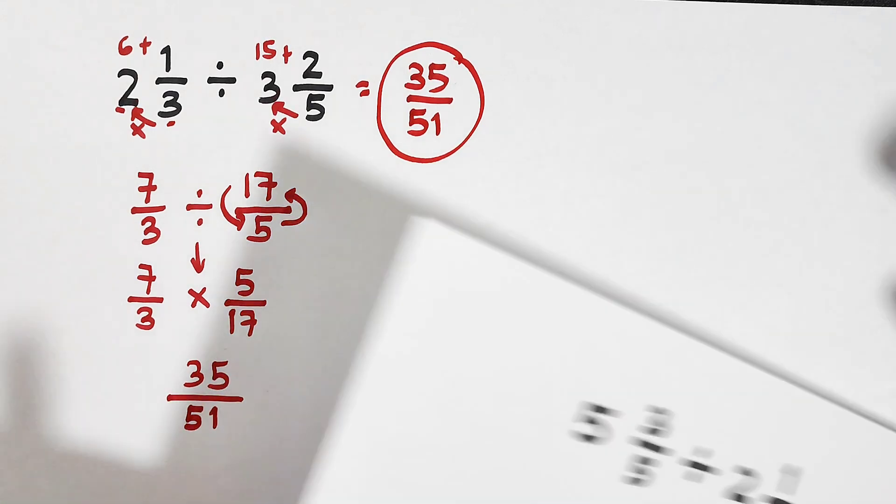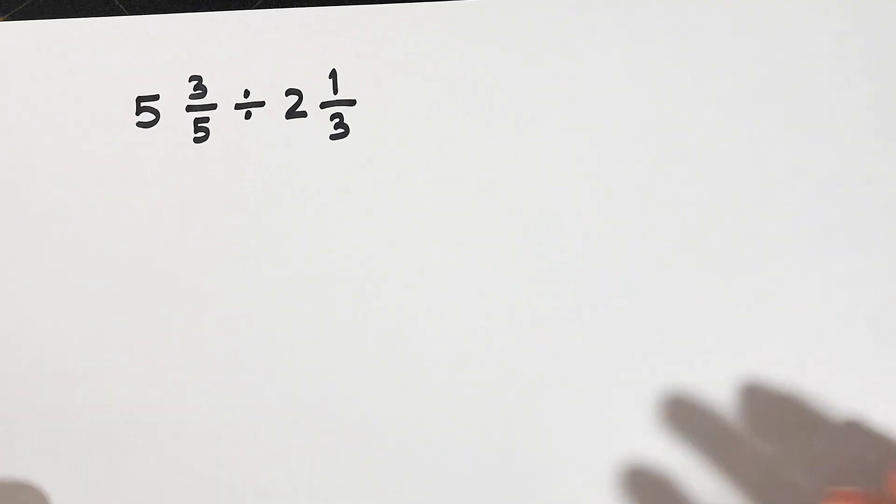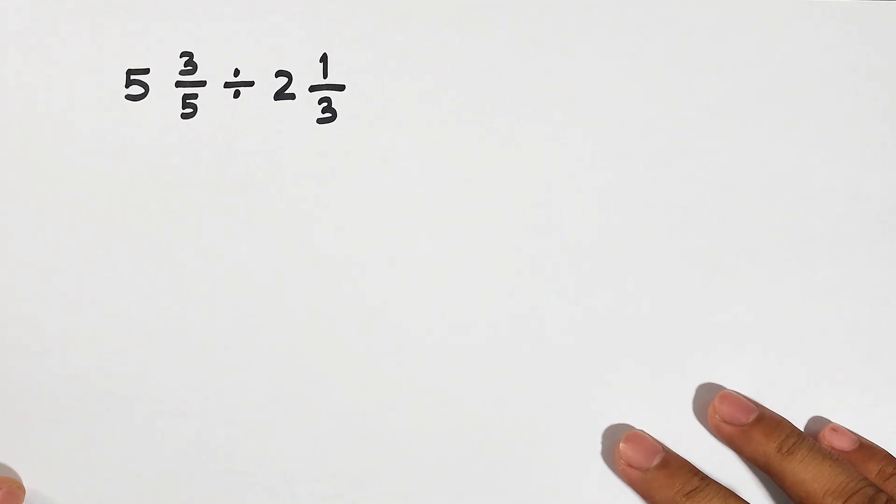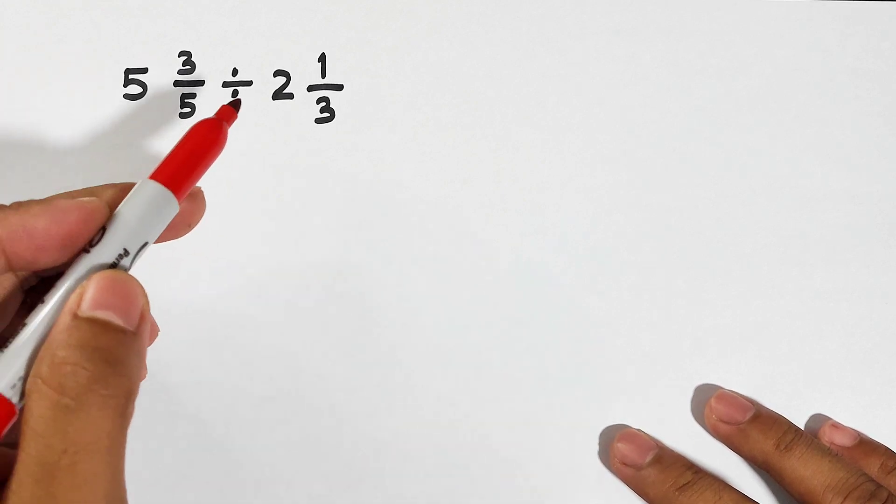Now let's move on with item number two. With item number two, what we have here is 5 and 3/5 divided by 2 and 1/3.